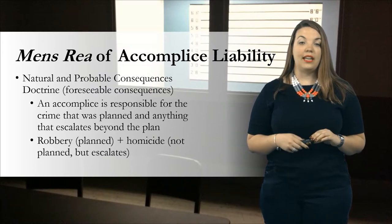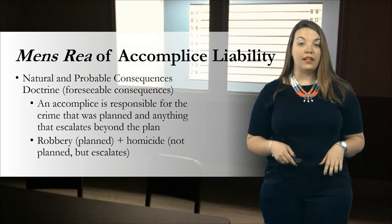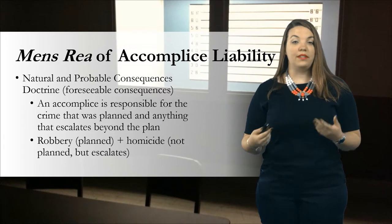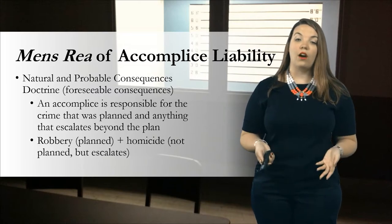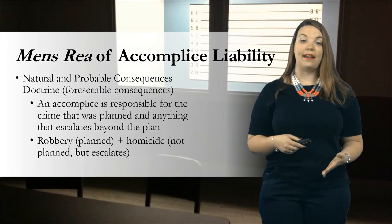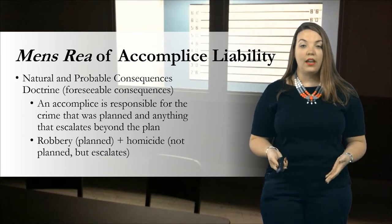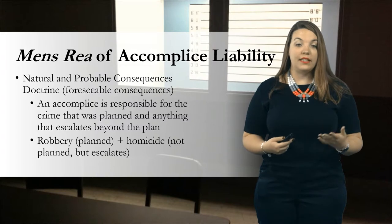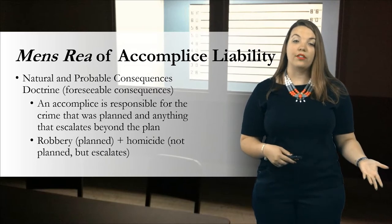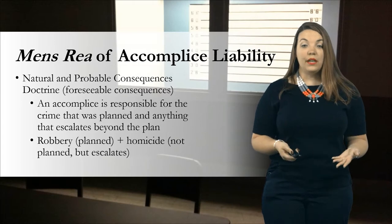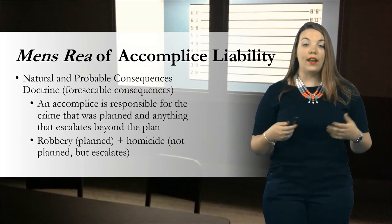Further tied into accomplice liability is the idea of escalation and foreseeable consequences. Under the natural and probable consequences doctrine, you should be able to predict something that could potentially happen during the commission of another crime. For instance, if during our bank robbery we bring in firearms just in case we need to use them to influence people inside the bank to be more cooperative, you might walk in thinking the only thing that's going to happen is the robbery. But if your partner ends up shooting and killing a resistant bank manager, that's probably a foreseeable consequence of the initial robbery — and now we have a felony murder situation. This really builds into derivative liability: if one person does something, then everybody who's present is equally guilty of whatever is committed.